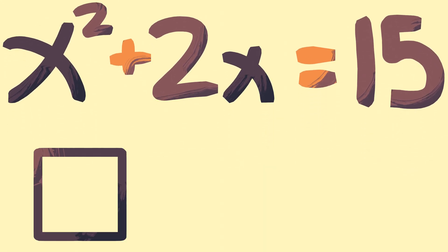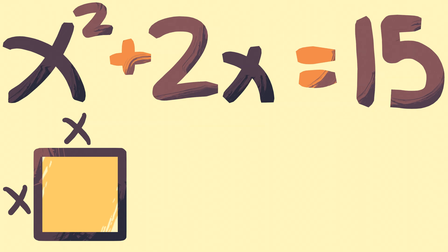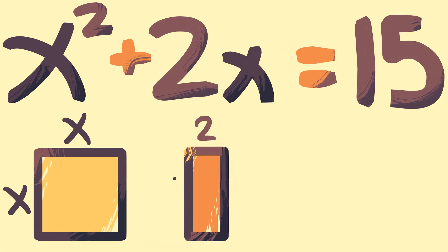x squared represents a square of side length x, as the area of a square is simply its side length squared. Continuing our geometrical representation, 2x represents a rectangle with side lengths 2 and x.